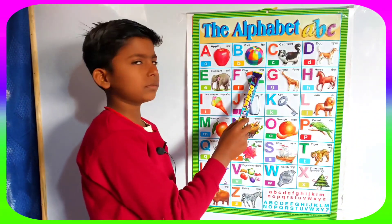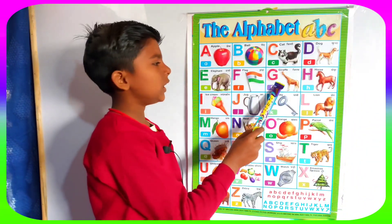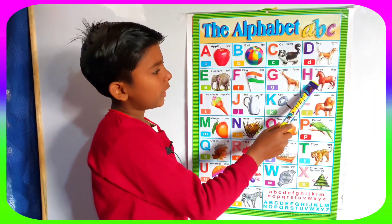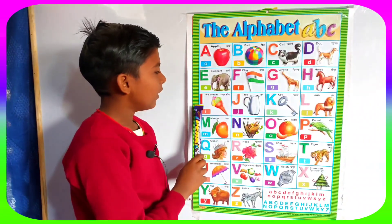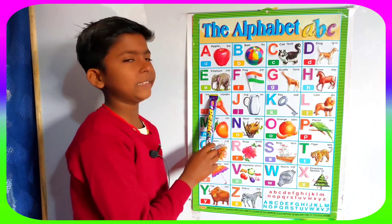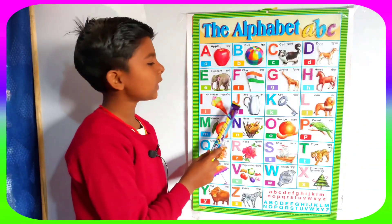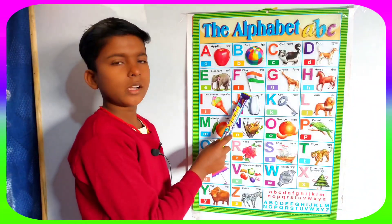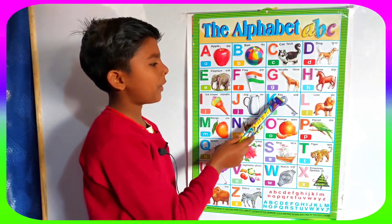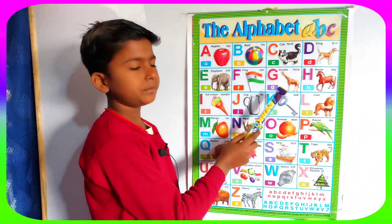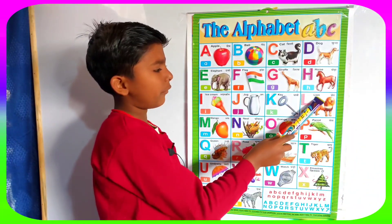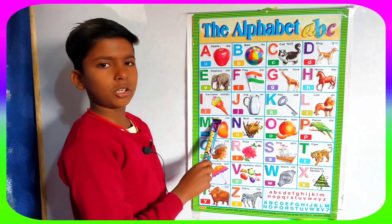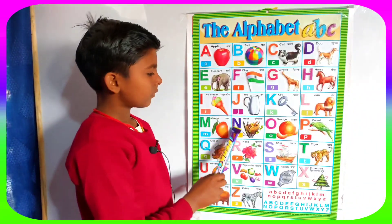F for egg, G for giraffe, H for horse, I for ice cream, J for jog, K for key, L for lion, M for mango.